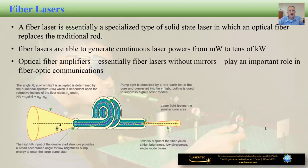Finally, fiber lasers are a specialized type of solid-state laser in which an optical fiber replaces the traditional rod. Fiber lasers are able to generate continuous laser powers from milliwatts all the way to tens of kilowatts, with the active medium being a relatively long optical fiber. The fiber laser in our lab is in the range of a few watts — a Class 4 laser that can create significant damage on brick or melt plastic. Fiber lasers have found many applications, especially in material processing, and are very often used to cut metal.